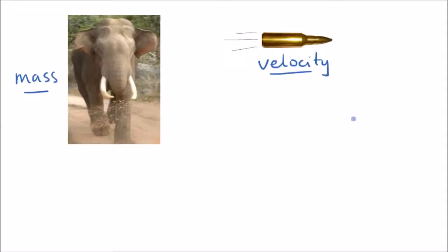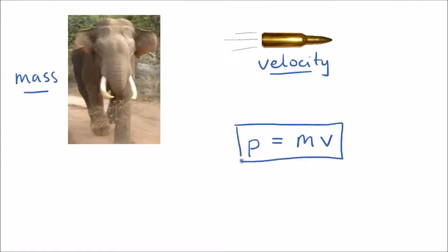This shows us the two factors that determine momentum, and in fact momentum is given by this equation. P is the symbol for momentum, and it's mass times velocity. The mass is given in kilograms, velocity in meters per second, and momentum is measured in kilogram meters per second.